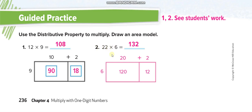Similarly for this one, we draw an area model. We break 22 into two parts: 20 and 2. We give the bigger space to 20 and the smaller one to 2. The number we are multiplying by is 6, so we write 6 here. 6 times 20 equals 120, and 6 times 2 equals 12. Then 120 plus 12 equals 132.